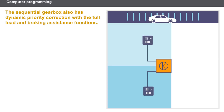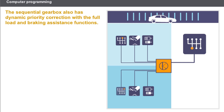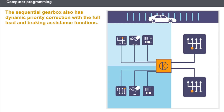In addition to breakdown and safety modes, the sequential gearbox also has dynamic priority correction with the full load and braking assistance functions. When the driver presses the accelerator pedal sharply past the kick-down point, the computer anticipates changing down a gear to give enough engine speed for overtaking. The braking assistance function is activated when the brake pedal is depressed, giving maximum engine braking while anticipating downshifts.